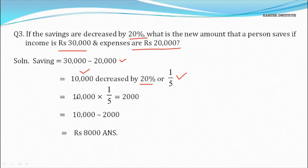10,000 × 1/5 = 2,000, so there is a decrease of ₹2,000 in savings. Therefore, the new savings = 10,000 − 2,000 = ₹8,000 is the answer.